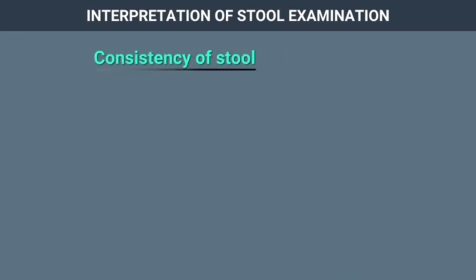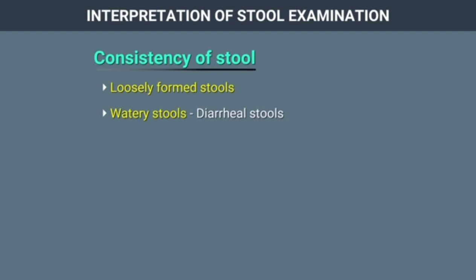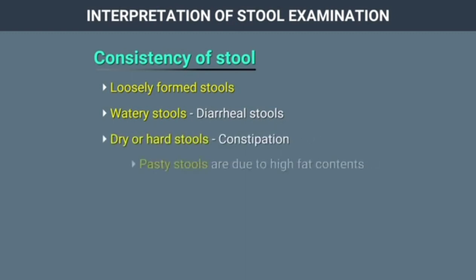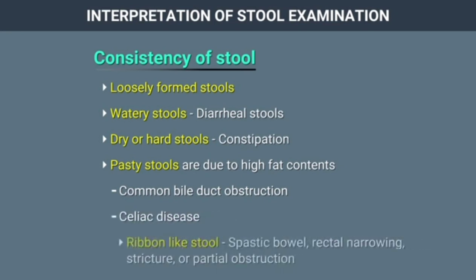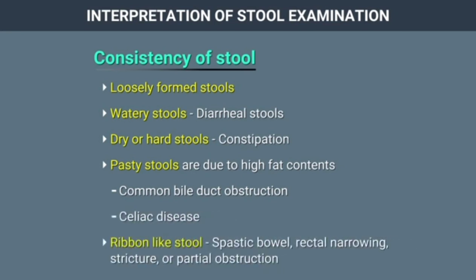Consistency of stool is described as loosely formed stools, watery stools as seen in diarrheal stools, dry or hard stools as seen in constipation, pasty stools due to high fat content seen in common bile duct obstruction or celiac disease, and ribbon-like stool suggesting spastic bowel, rectal narrowing, stricture, or partial obstruction.